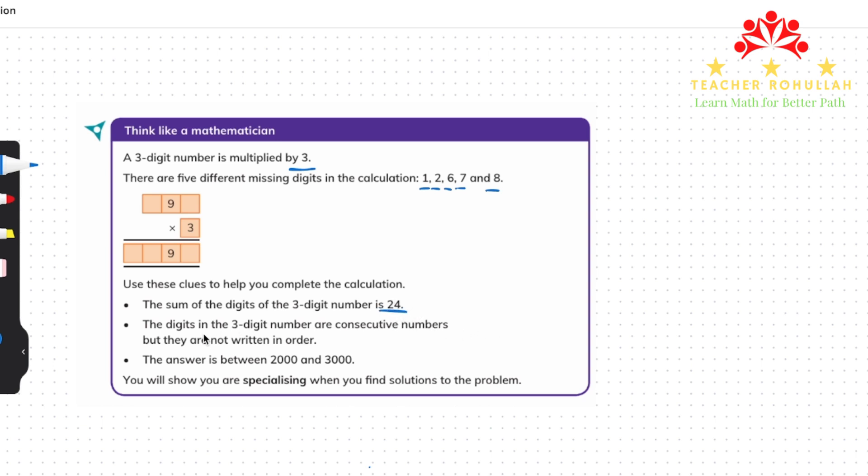The second one says the digits in the three-digit number are consecutive numbers, but they are not written in order. The answer is between 2,000 and 3,000. And it says you will show your specializing when you find the solution to the problem.